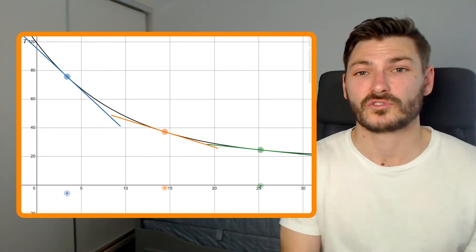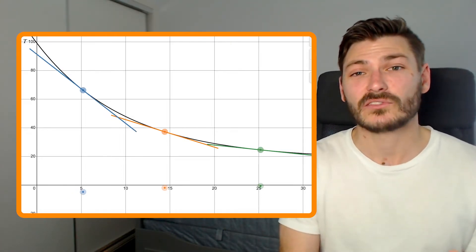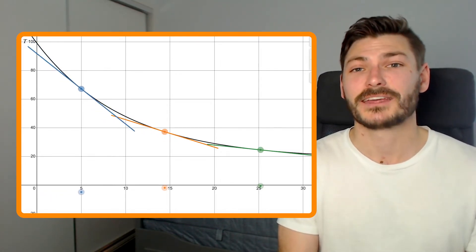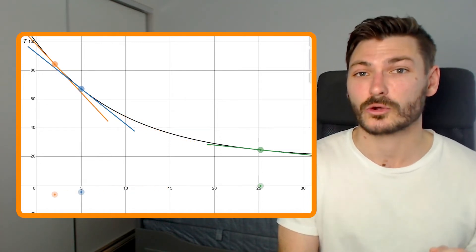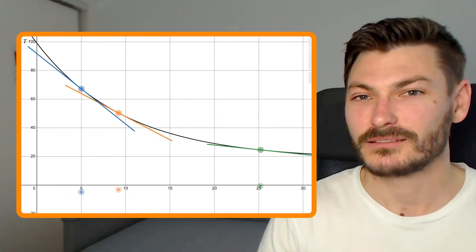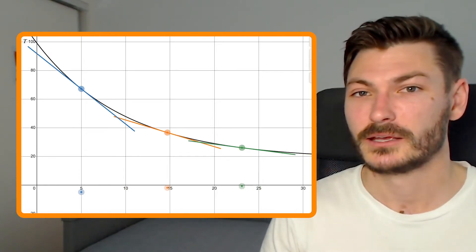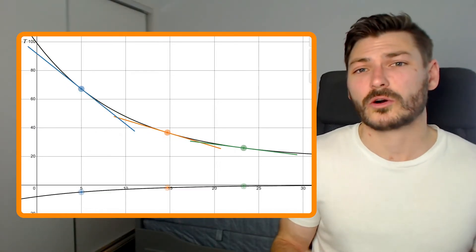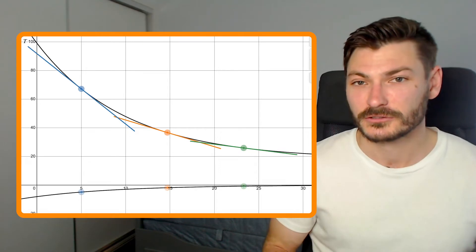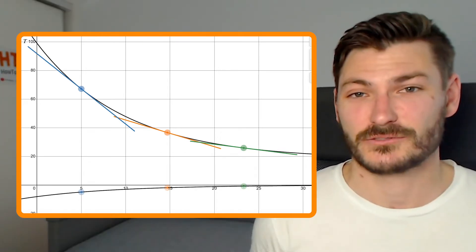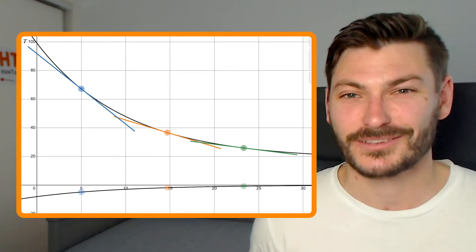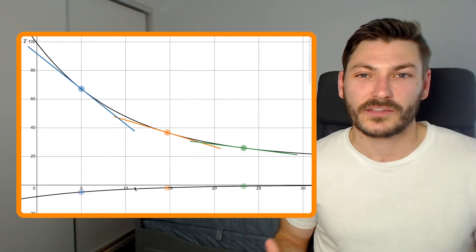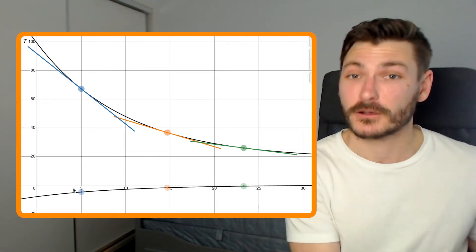I can move these values around, and as the point on the original function changes its tangent line changes, and because of that the derivative value changes along with it. If we plotted infinitely many of these values instead of just three, we would end up getting something that resembled a curve. This curve is what we call the derivative function of the original. It represents any derivative value at any point in time along this curve, and is typically what you get when a question says 'find the derivative of this function.'